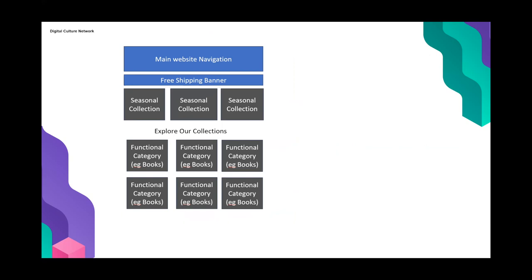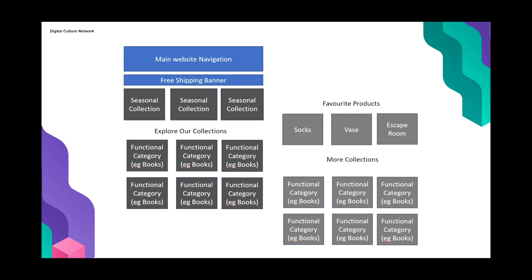Sometimes people struggle to think of the home page in terms of zones that can be merchandised. It can be natural in a shop to think about what's on each shelf, and you can think about your home page the same way. This skeleton layout or wireframe shows a typical structure: navigation at the top, a free shipping message, zones to present different ranges, and particular products highlighted further down — individual pockets to be actively merchandised, changed with the seasons or to reflect what's going on in your organization.